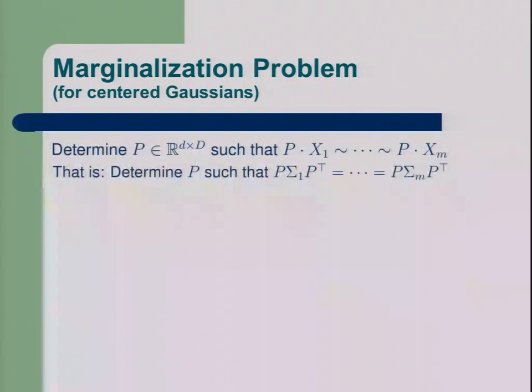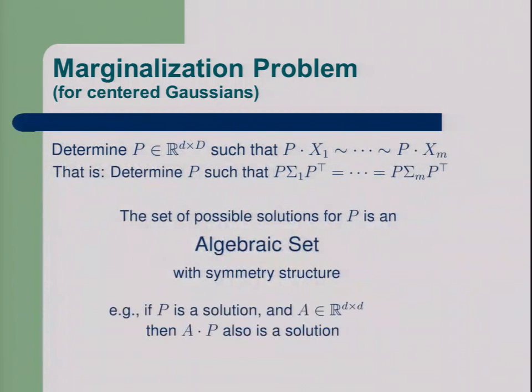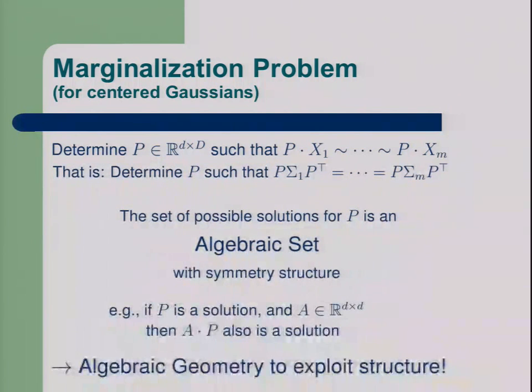More generally, if you have small d and big D, then there are these equations. The set of solutions is an algebraic set, which also has some symmetry structure. For example, if you multiply a matrix from the left of the solution, then there's another solution, and this holds for any solution. There's some structure in this set, and this is a common phenomenon in machine learning. Whenever you do some projection pursuit, you have this kind of symmetries. I will try to give the idea how one can, in this example and in more general as described in our paper, use computational techniques from algebraic geometry to exploit the structure.